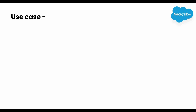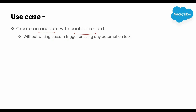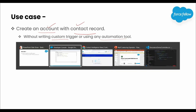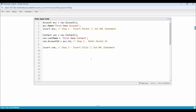To better understand this point, let's refer to a simple use case. Let's say we have a requirement to create an account with a contact record, without writing a custom trigger or using any automation tools. It means here we have to create an account and contact record together, where account will be the parent and contact will be the child.